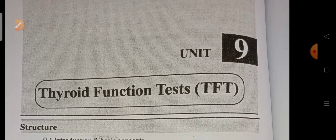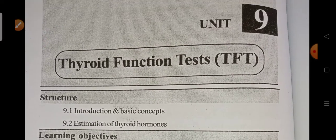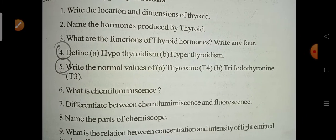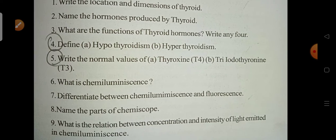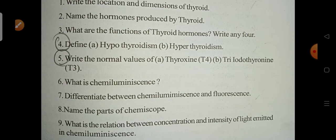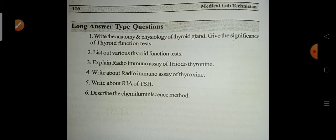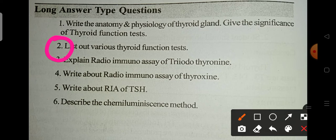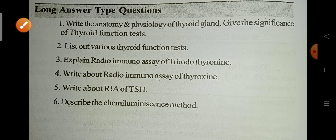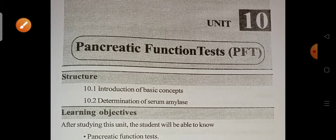Unit 9 is the Thyroid Function Test. The important questions include: define hypothyroidism and hyperthyroidism, write the normal values of thyroxine (T3 and T4), and list out the various thyroid function tests. Questions 4, 5, and 2 are particularly important in this unit.